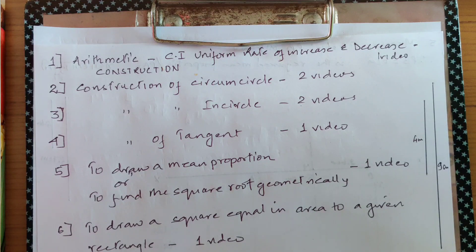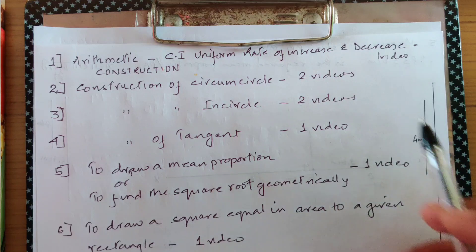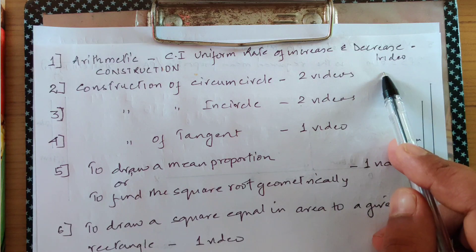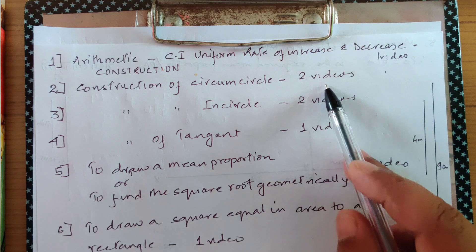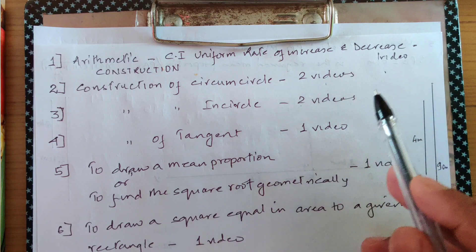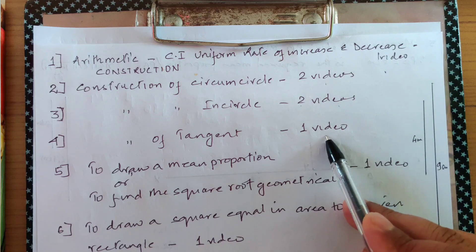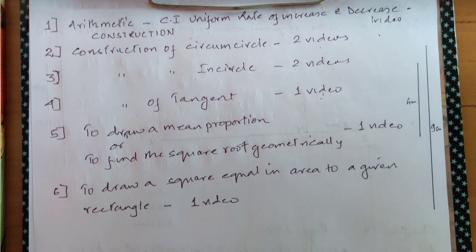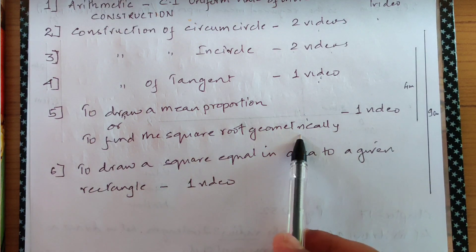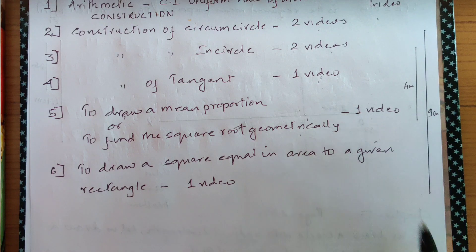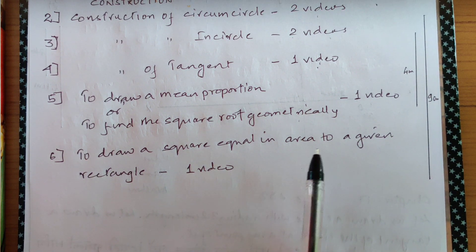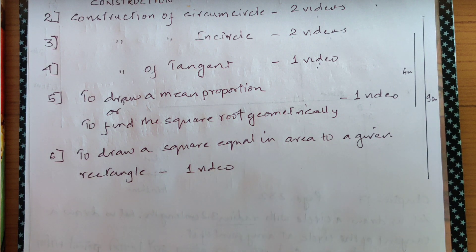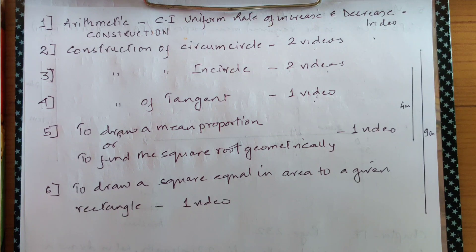A quick recap on whatever we have achieved till now: one video on compound interest — uniform rate of increase and decrease; construction of circumcircle — two videos; construction of incircle — two videos; construction of tangent — one video; to draw a mean proportion or to find the square root geometrically — one video. And today's video is to draw a square equal in area to a given rectangle.